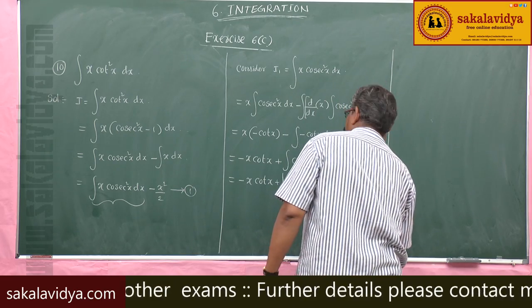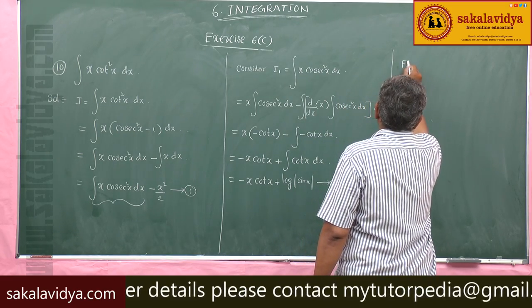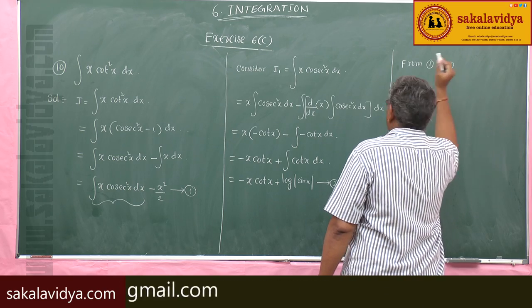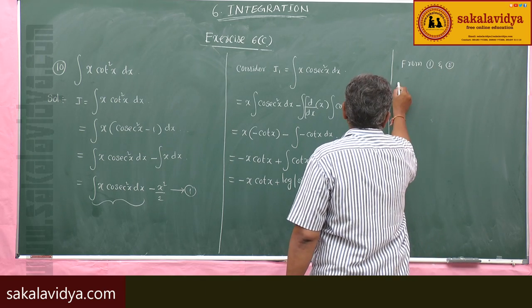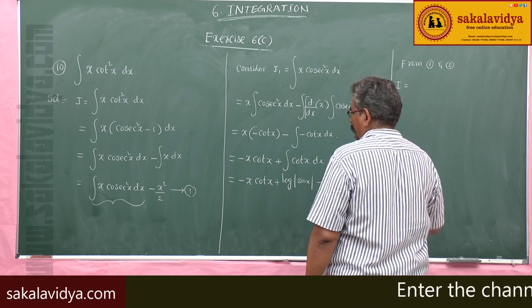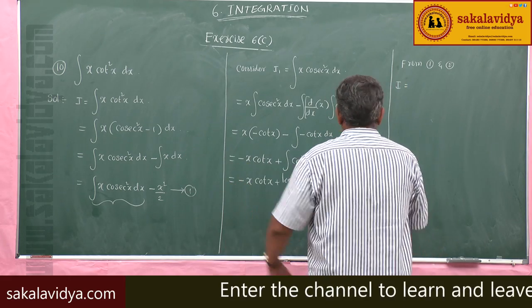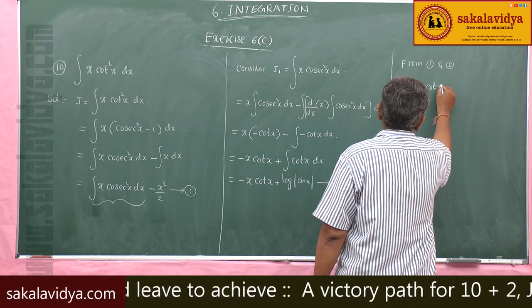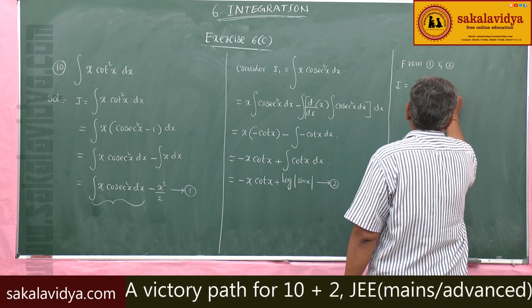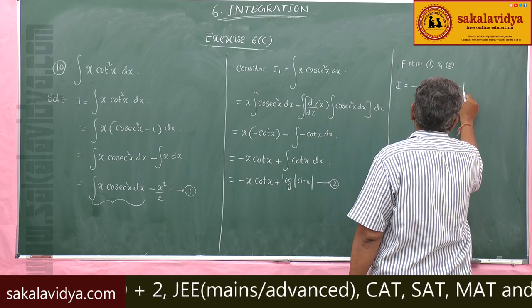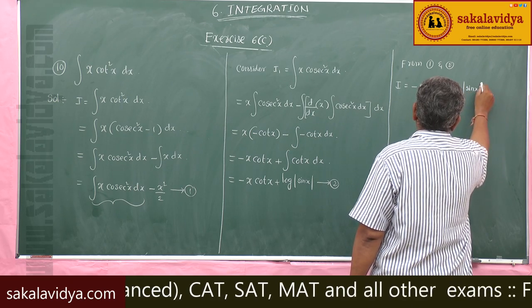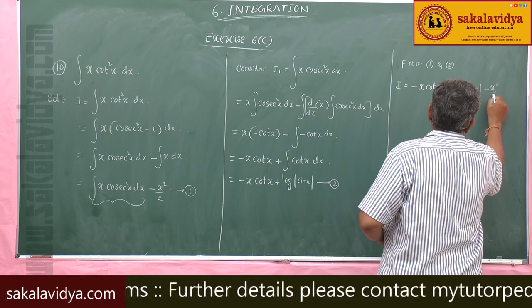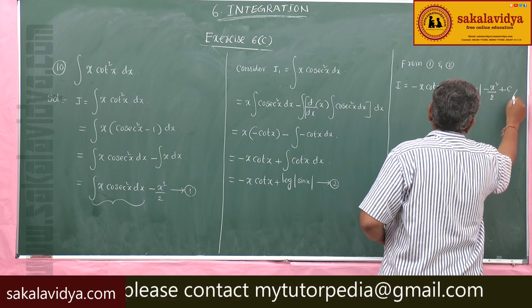From equations 1 and 2, I = −x·cot(x) + log|sin(x)| − x²/2 + constant of integration.